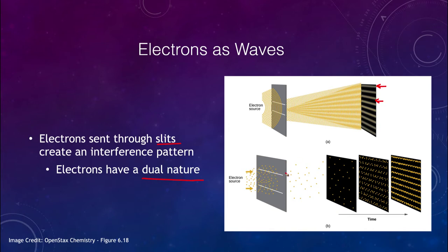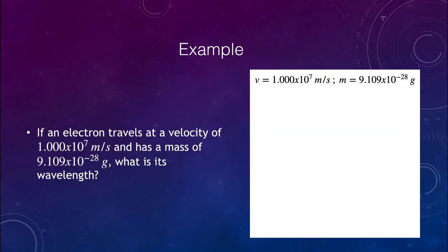When we look at electrons individually with just a small amount, it looks like they're random, but over time as you build that up you see there are very definite areas of concentration and very definite areas of depletion where you do not see very many electrons. We can do some examples and calculations with this.